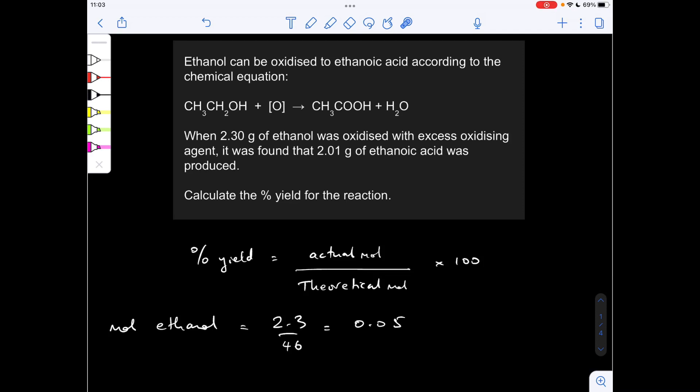So theoretically, if it was 100% yield, if there was complete conversion, you would get the same number of moles of ethanoic acid as you've got of ethanol because of the ratio. So our theoretical moles of ethanoic acid is 0.05 as well.